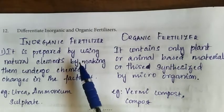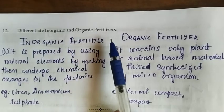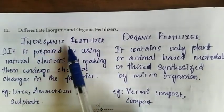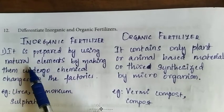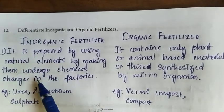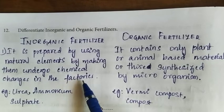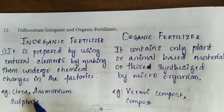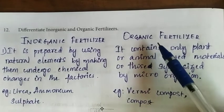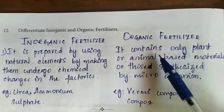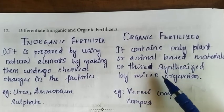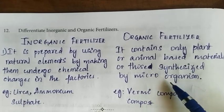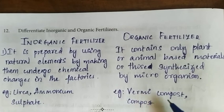Twelfth question: differentiate inorganic and organic fertilizers. Inorganic fertilizer: it is prepared by using natural elements by making them undergo chemical changes in factories. Example: urea, ammonium sulfate. Organic fertilizer: it contains only plant or animal-based material, or those synthesized by microorganisms. Example: vermicompost.